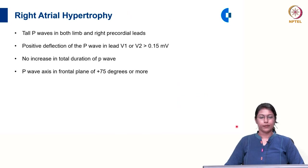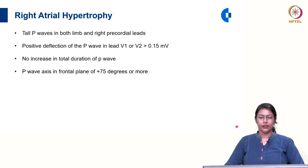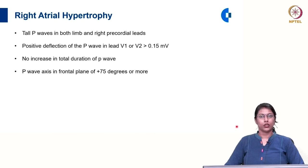To summarize right atrial abnormality: we see tall P waves in both limb and right precordial leads. A positive deflection of the P wave in lead V1 or V2 of more than 0.15 millivolt is seen. There is no increase in the total duration of the P wave, and the P wave axis in the frontal plane is more than plus 75 degrees.